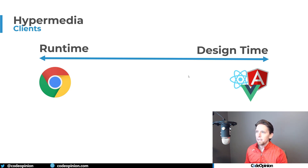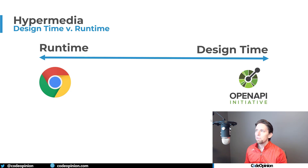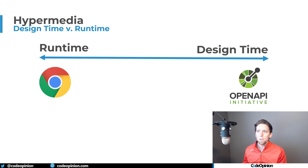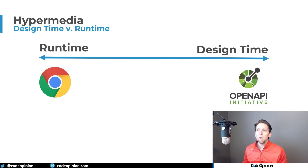What I mean by design time is with things like OpenAPI, we can define what our HTTP API is. You can see all the different routes available to you, what the responses could be, the different status codes. It's a great specification — no issues there.